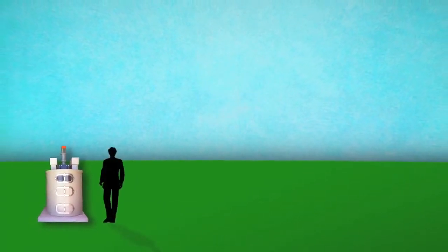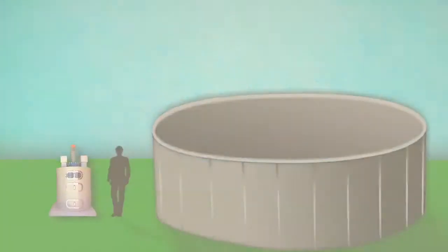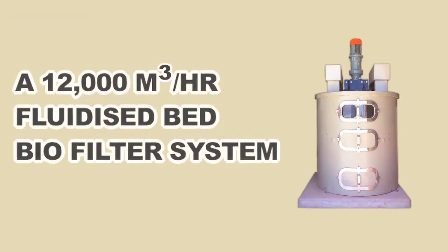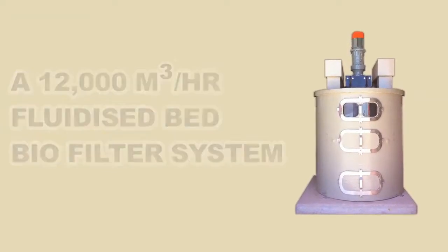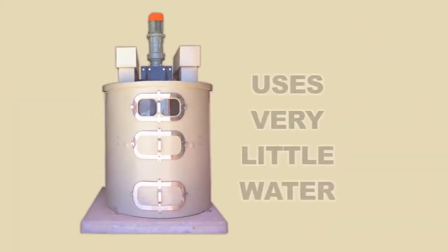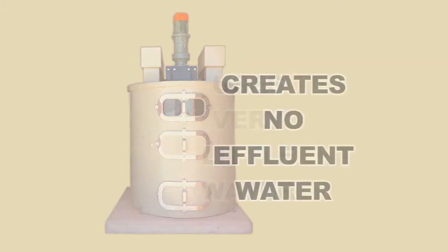The fluidized bed biofilter is a fraction of the size of a static bed biofilter. In fact, a 12,000 cubic meter per hour fluidized bed biofilter system has only a 2 meter radius. The fluidized bed biofilter uses very little water and creates no effluent water. Our media is humidity controlled and not water soaked.